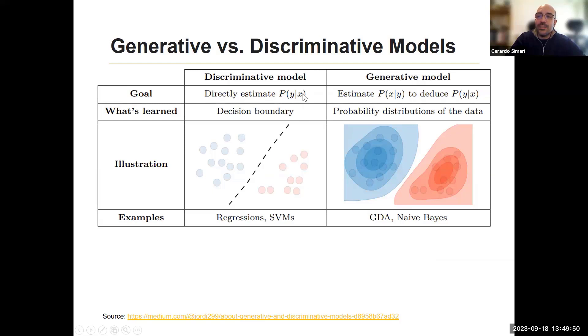So you're trying to directly estimate the probability that some unseen data will belong to one of the two classes. What's the probability of my observation given that it's in class A or class B? Examples are typical things like SVMs or regression-based classification, where generative models estimate a probability distribution to deduce the same thing that the decision boundary was giving you before. Instead of learning this boundary, you're actually learning the probability distributions of the data. One of the most well-known techniques for this is naive Bayes, where you end up learning a probability distribution, and then you can use it for the same kind of task, but you can also generate elements based on these distributions.